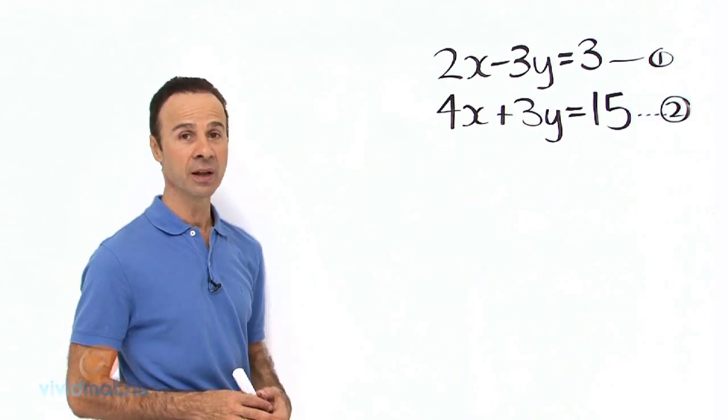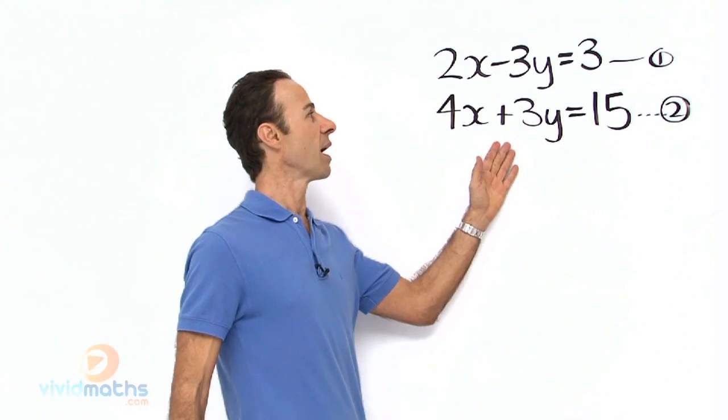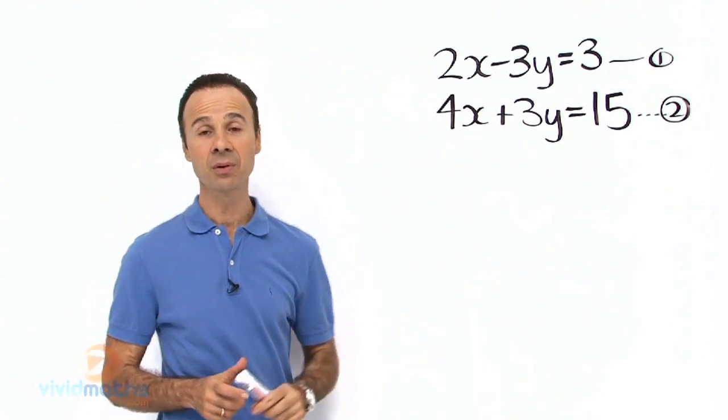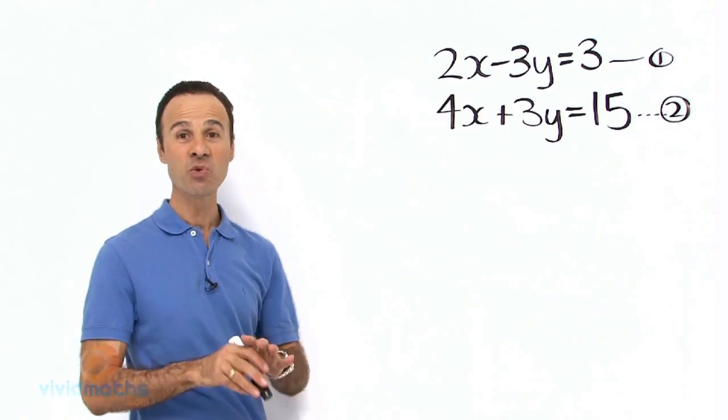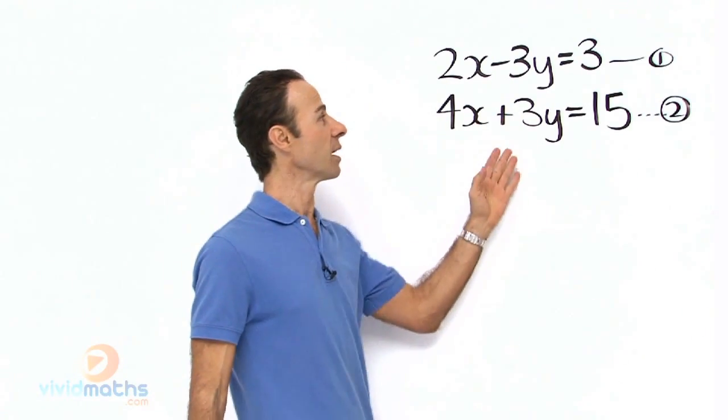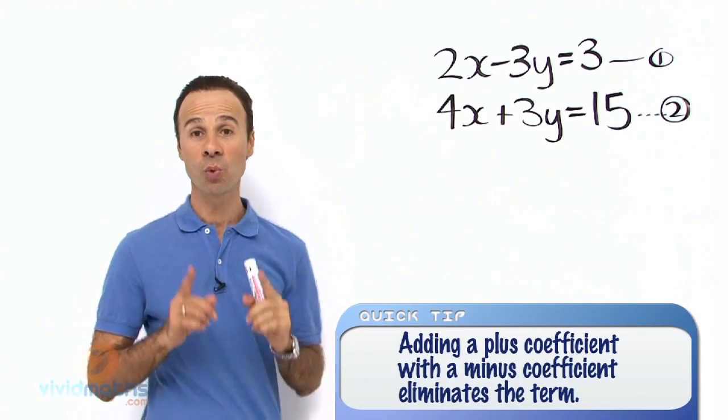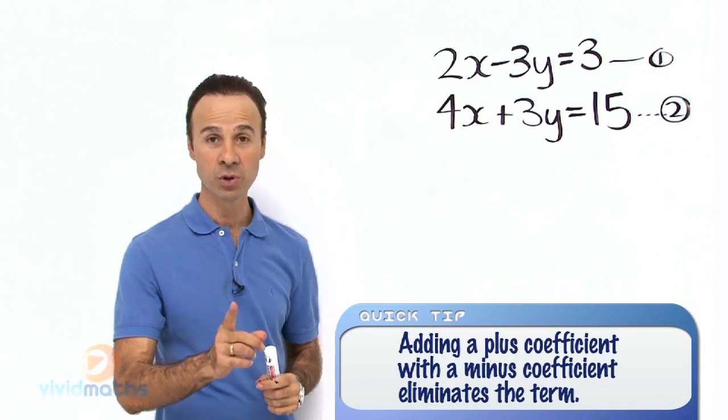Now it's rather convenient in this example that we have a -3y and a +3y. So given the elimination method, we are going to eliminate them, eradicate them. The way we do that, if that's a -3 and that's a +3, we add both equations together and hence we come up with one equation and one pronumeral.